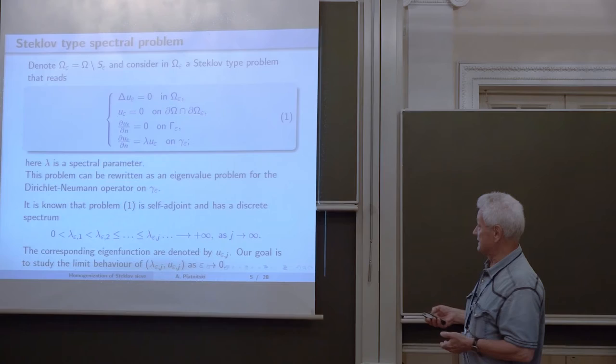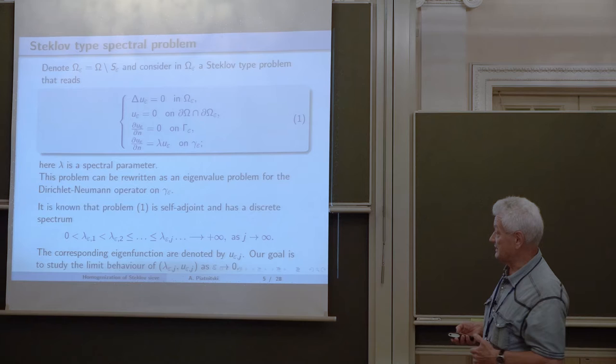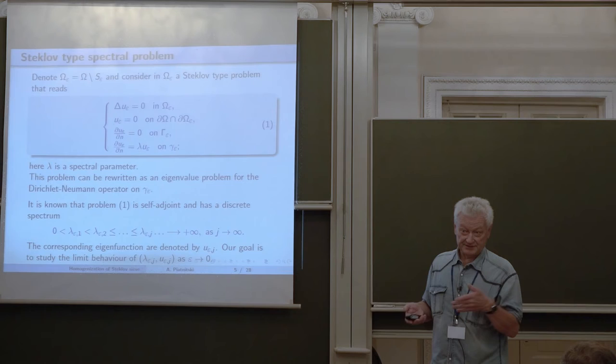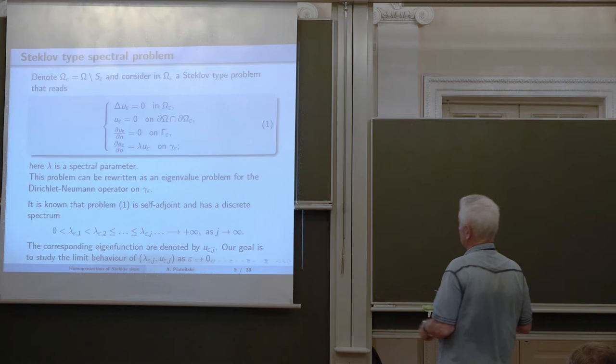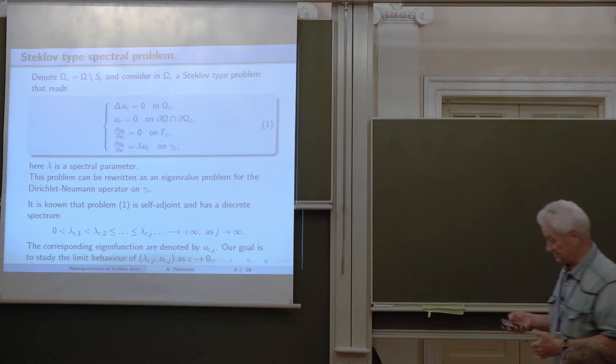For fixed epsilon, Steklov-type problems are well studied. We know it is a self-adjoint problem with these boundary conditions, and there is a sequence of real eigenvalues tending to plus infinity; the first one is simple and positive. All these facts are well known. It does not matter if the Steklov condition is imposed on the whole boundary or only on a part, as long as that part has positive surface measure.